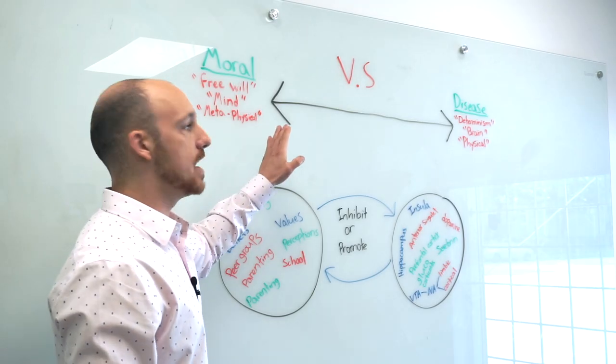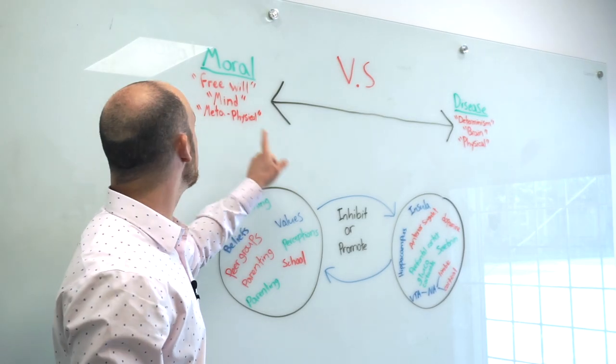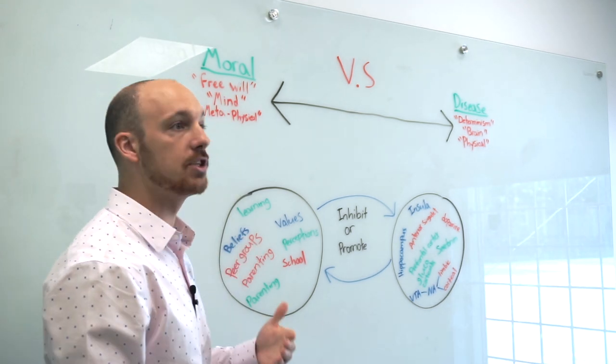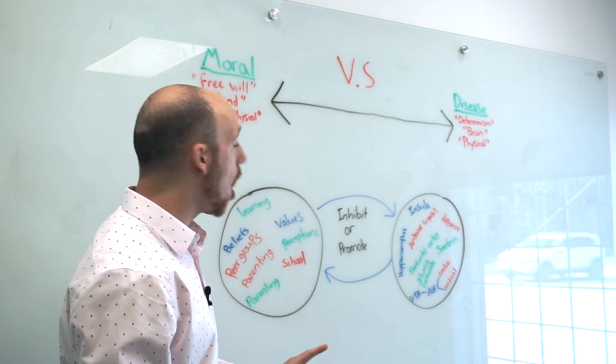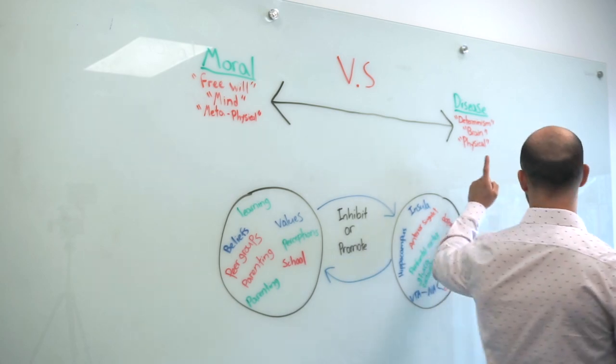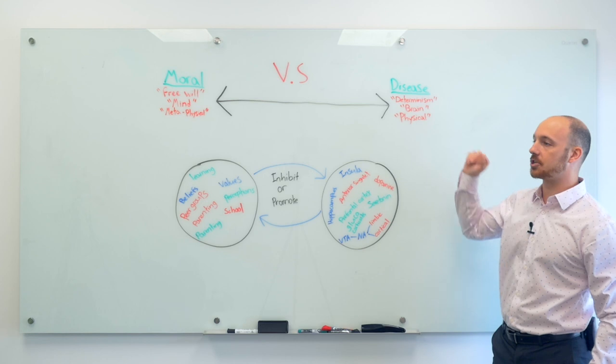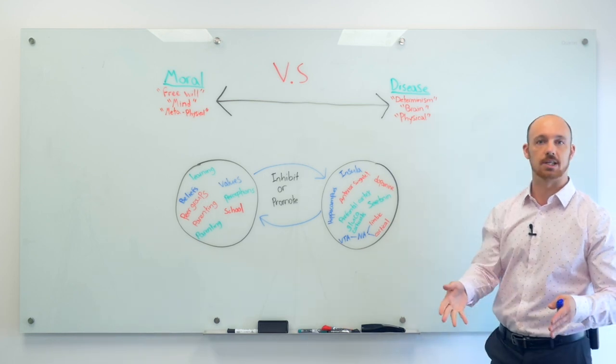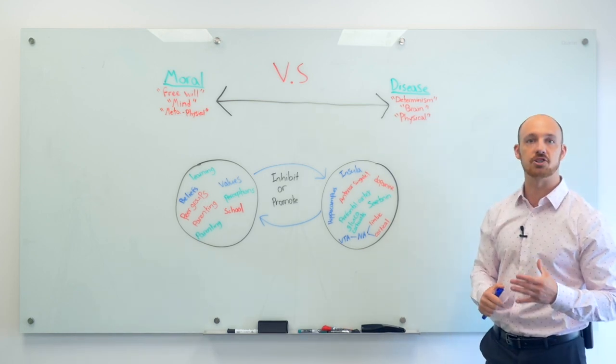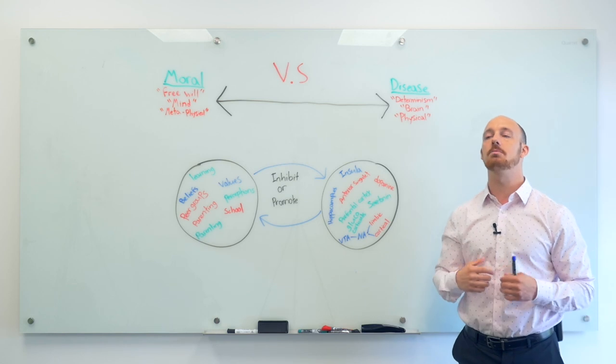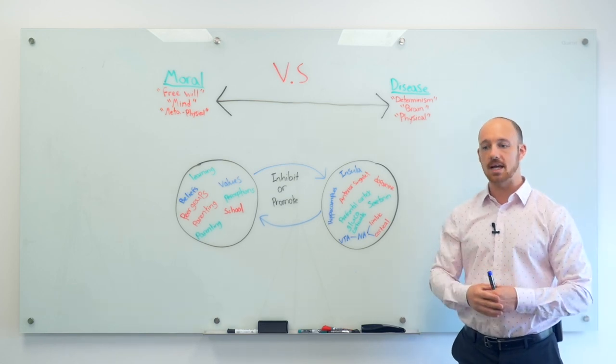Now I don't believe anyone has 100% free will. I do believe in free will, but I believe it's on a spectrum. Now what I also don't believe is if we go back over here to the disease model of addiction, that 100% of my activities are predetermined just because I was alive and I have a certain set of genetics. I do think that human beings have an element that we're able to choose.